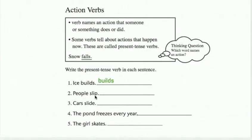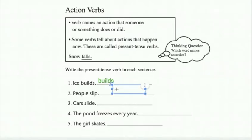People slip. Which word names an action? Well, it also helps to think about the fact that the word people — we know that names a noun. Nouns are people, places, things, and animals. Slip — you could do that on ice. Slip. That's an action.